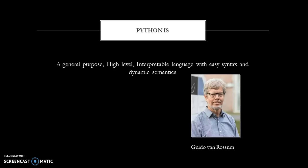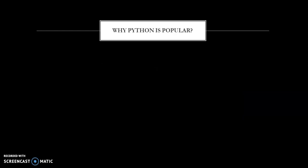We can say Python is a general-purpose, high-level, interpretable language with easy syntax and dynamic semantics. Who developed Python? Guido van Rossum developed this Python programming language as a hobby. While using other programming languages he faced some problems, and he wanted to solve those by developing a new language. He started developing Python in 1985 and succeeded in releasing the first version in 1991. Out of his hobby, this programming language has come to us.